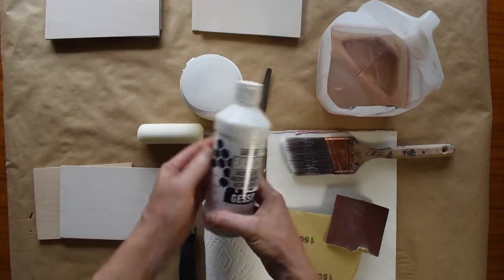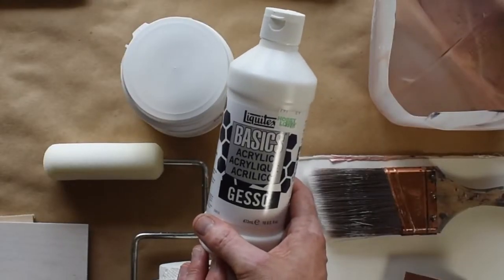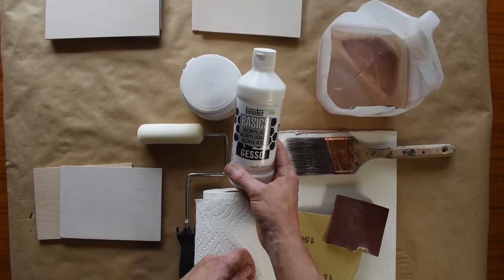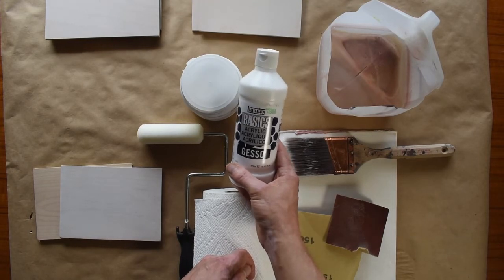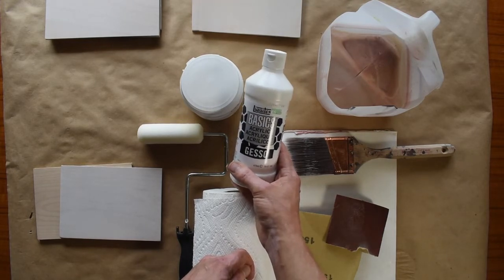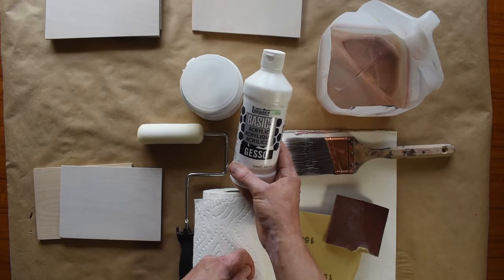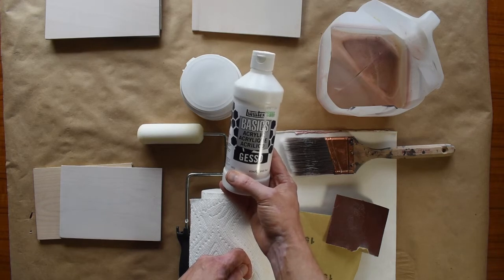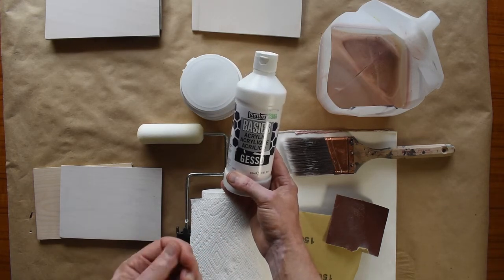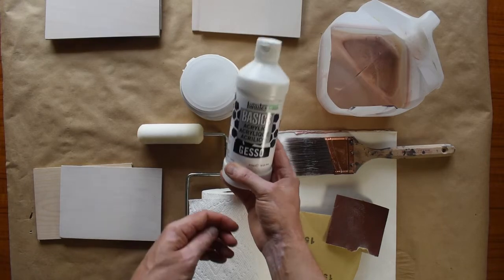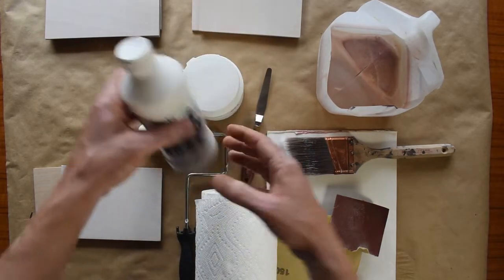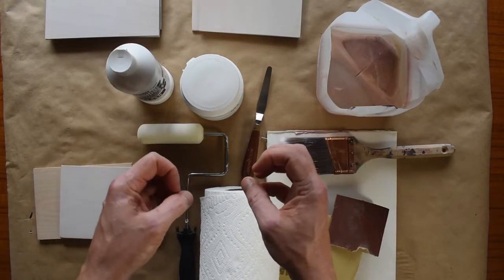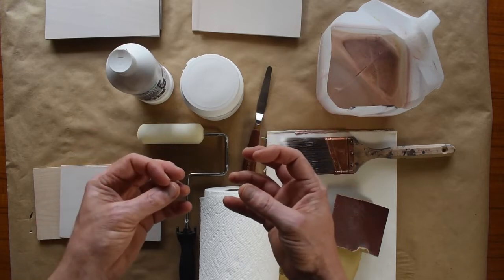This is what I used for a long time. It's just regular Liquitex basics acrylic gesso. You can find this—you can even get it in gallon jugs. You can find this at Hobby Lobby, Michael's, maybe even Walmart. Sometimes in the craft section they might have some gesso. So I like this. I've used this for a long time, but something about this acrylic gesso is that it's a little bit absorbent. And if you've never used it, what that means is if you're doing oil painting on it, especially, that primer kind of just sucks the oil out of the paint and it makes it look really matte and flat.